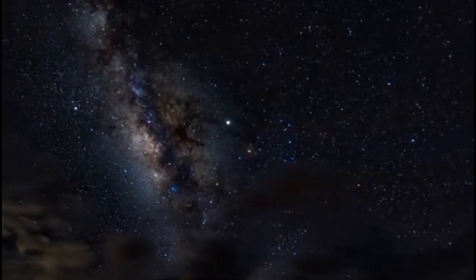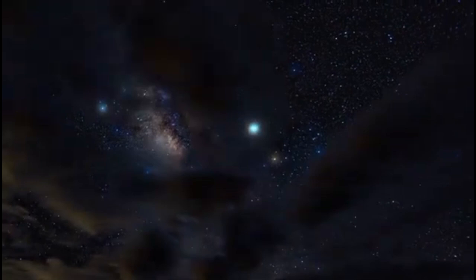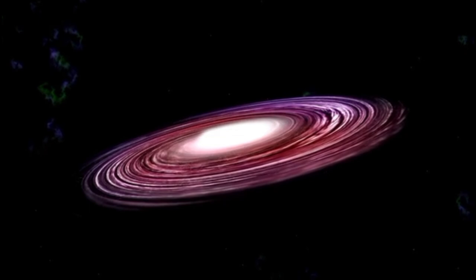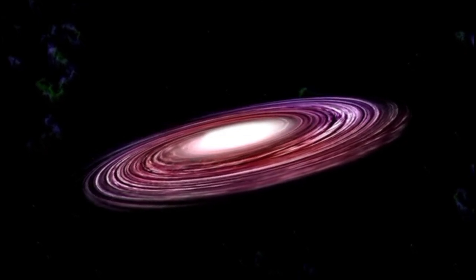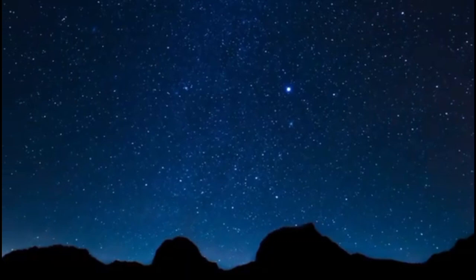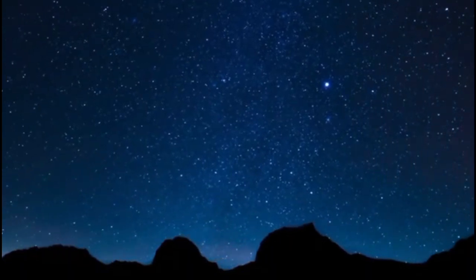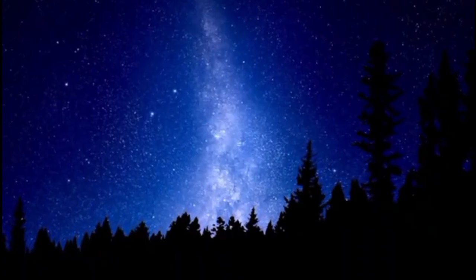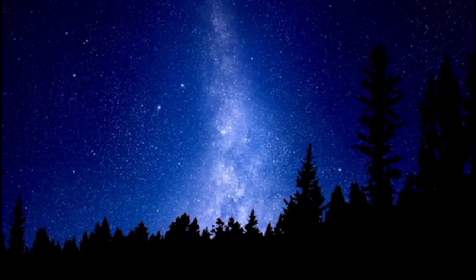One compelling example is gravitational lensing. Light from distant stars bends around massive objects like galaxies. This occurs because the mass of a galaxy curves the space-time the light travels through, changing its path. Such phenomena offer tangible proof of the dynamic relationship between mass, energy and space-time.